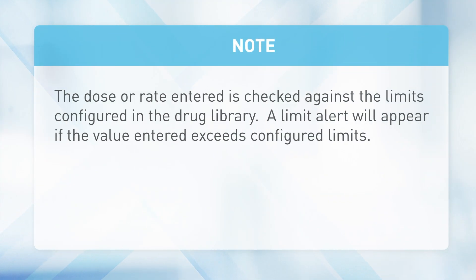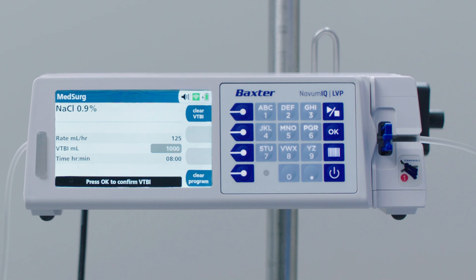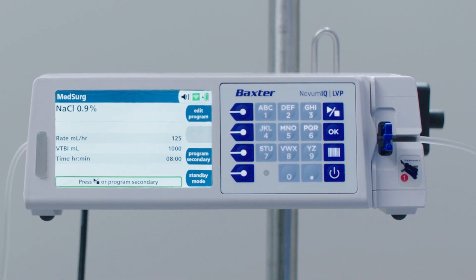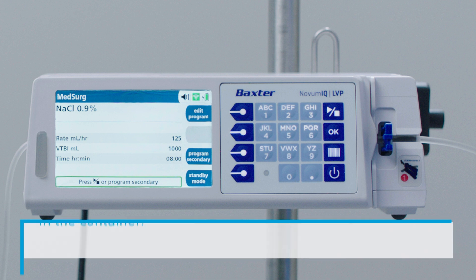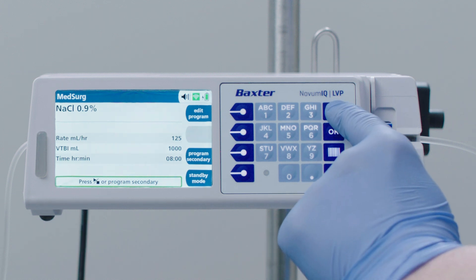The dose or rate entered is checked against the limits configured in the Drug Library. A limit alert will appear if the value entered exceeds configured limits. Enter the volume to be infused, or VTBI, then press OK to confirm, or confirm the pre-programmed values and press OK. Time parameters are automatically calculated when you enter and confirm the VTBI. Review the values for the displayed drug to make sure they are correct. Verify that the total VTBI does not exceed the volume in the container. Press the RUN-STOP key to start the infusion.